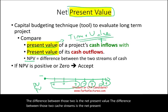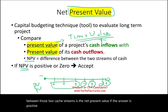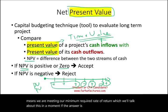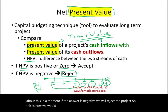If NPV is positive or zero, we accept the project. It means we are meeting our minimum required rate of return, which we'll talk about in a moment. If the answer is negative, we will reject the project. This is how we use NPV to determine whether we should accept or not accept a project.